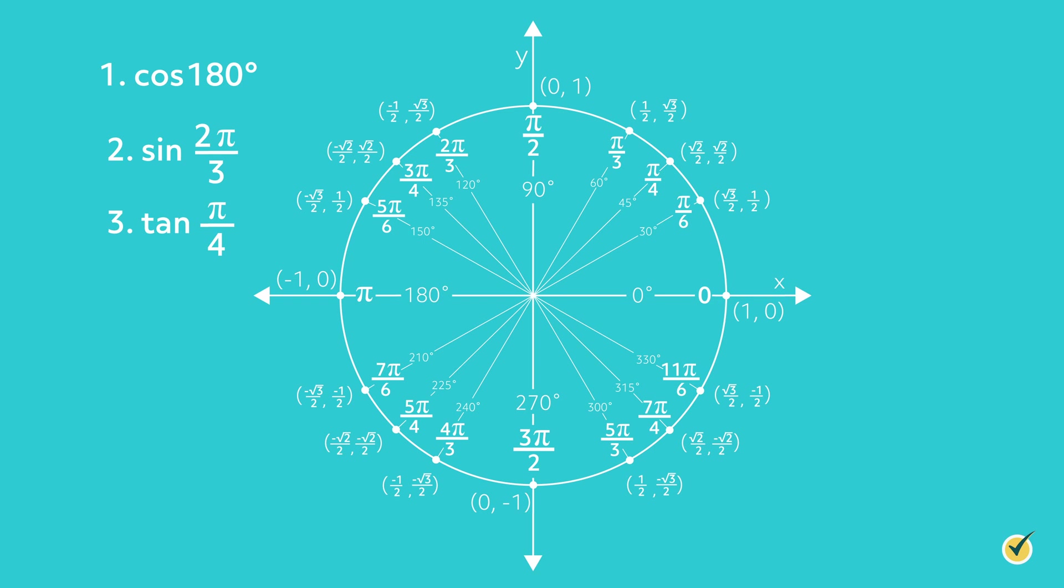Let's check your answers. The cosine of 180 degrees is negative 1, because at 180 degrees, the ray hits the circle at the point negative 1, 0. The sine of 2 pi over 3 is root 3 over 2, because it hits at the point negative 1 half, root 3 over 2. And the tangent of pi over 4 is 1, because the ray hits the circle at the point root 2 over 2, root 2 over 2. And root 2 over 2 divided by root 2 over 2 is equal to 1.